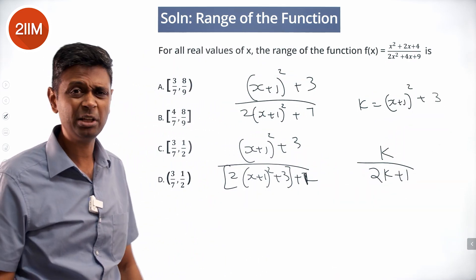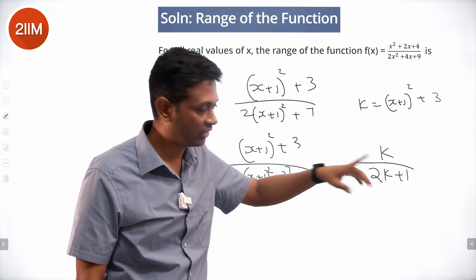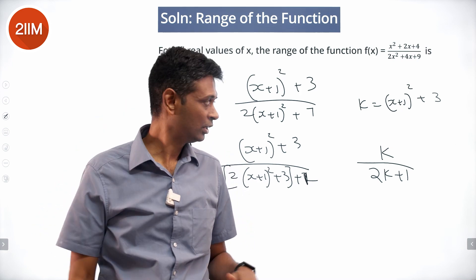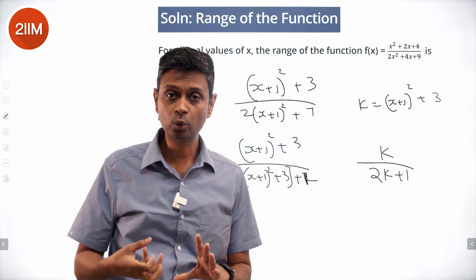So minimum value k can take is 3. This is 3 by 7. If k is any more than 3, then this number will keep getting bigger and bigger, k by 2k plus 1.